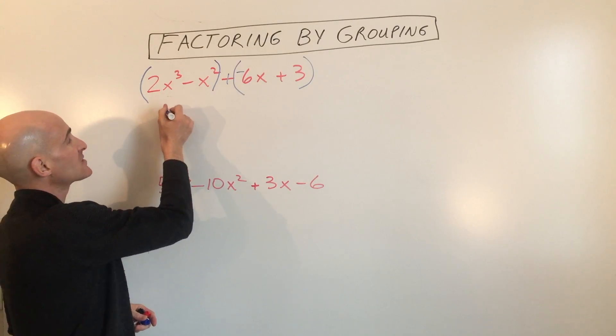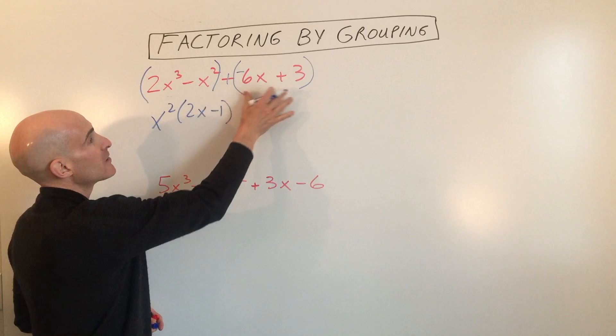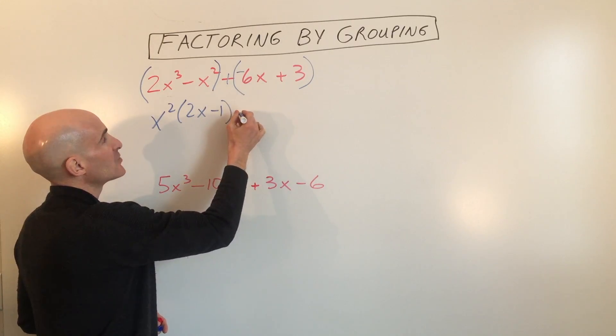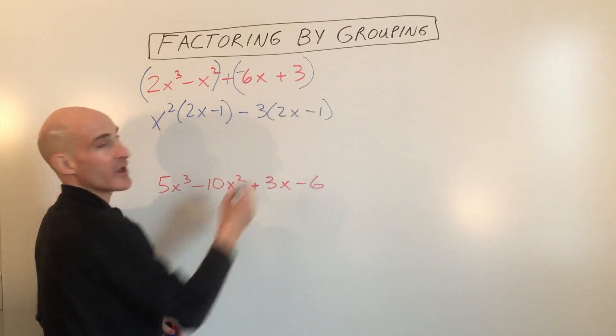So here that's going to be x squared. Here that's going to be 3, and I'm going to do negative 3. So that leaves us with 2x minus 1.